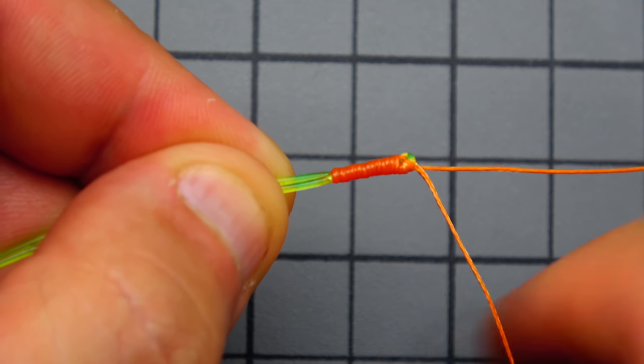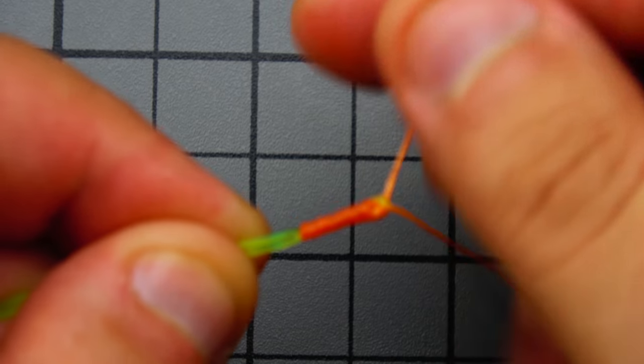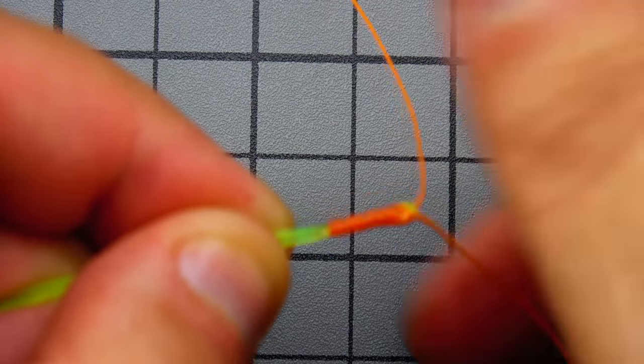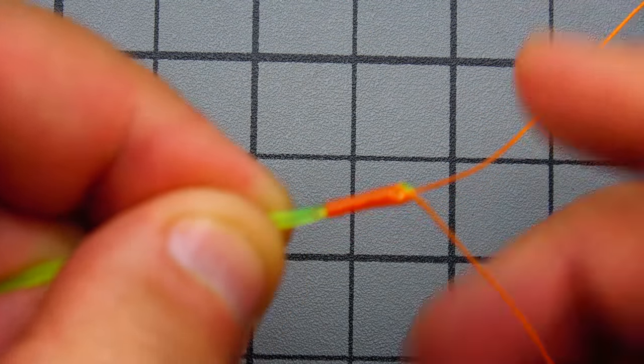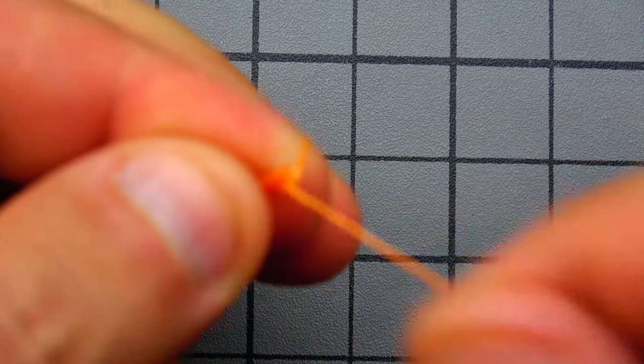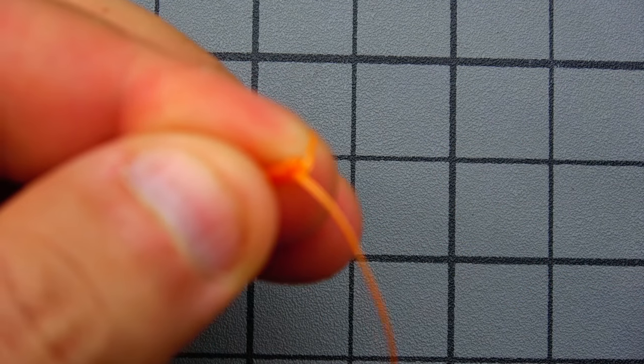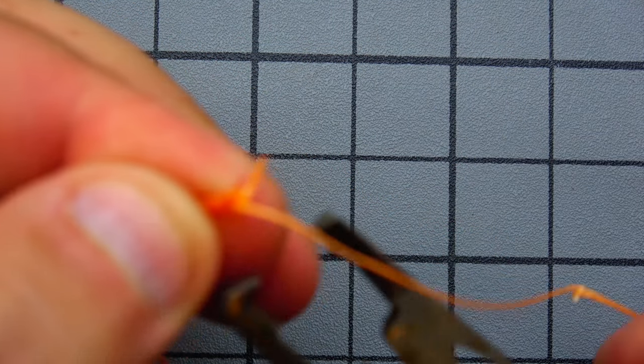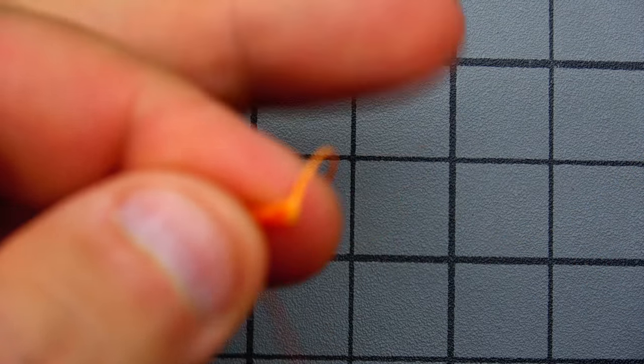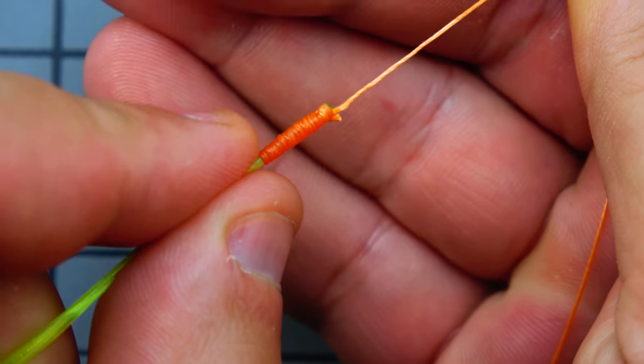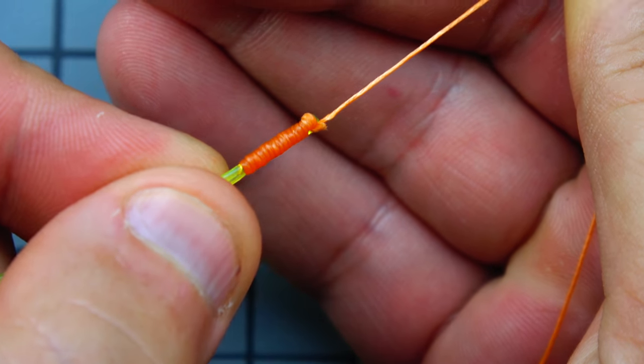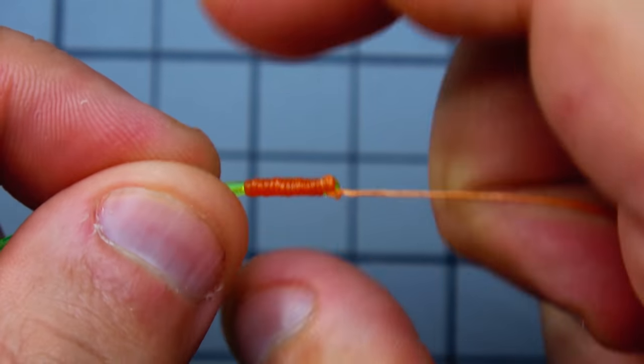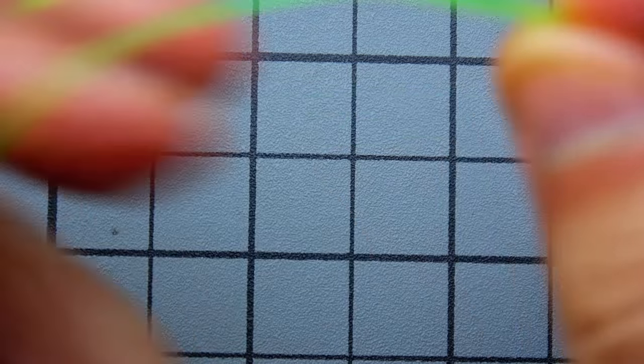Now, why is it improved? What did I do differently than anybody else? And why are those extra wraps through that loop with the tag end important? Basically, what wrapping that tag through again two additional times allows you to do? It allows you to take your cutter and literally cut the tag off completely. See, there's literally no tag in left of that braid. So you're going from main line directly to the leader.